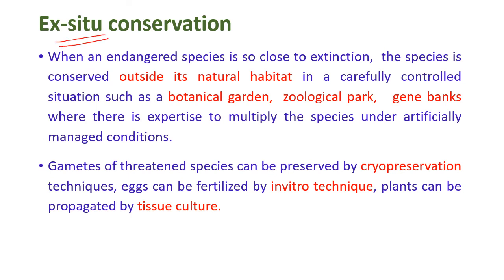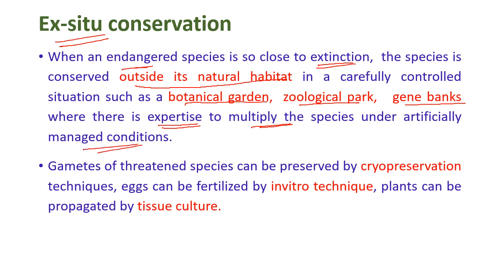Ex-situ conservation of biodiversity involves conserving an endangered species outside its natural habitat in a carefully controlled situation — such as botanical gardens, zoological parks, and gene banks — where expertise is available to protect and multiply the species under artificially managed conditions. The gametes of threatened species can be preserved using cryopreservation techniques, eggs can be fertilized by in-vitro techniques, and plants can be propagated by tissue culture techniques.